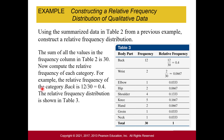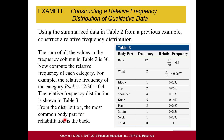From the relative frequency distribution, the most common part for rehab was the back. The relative frequencies are listed as decimals, but you can convert to a percent — for example, shoulder is 13.3% of patients. Check your work: the relative frequencies should always add up to 1, or 100%, since you're including all of the data.